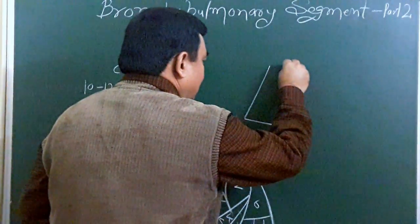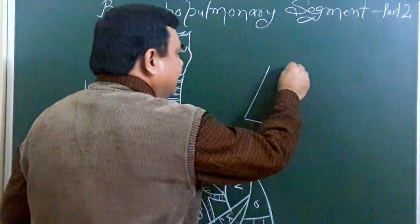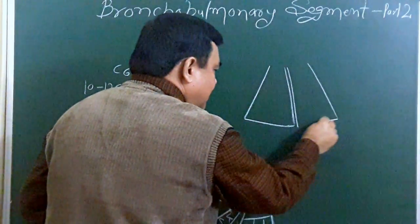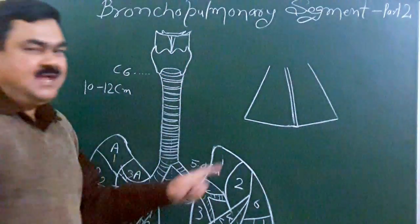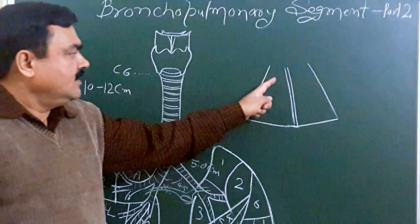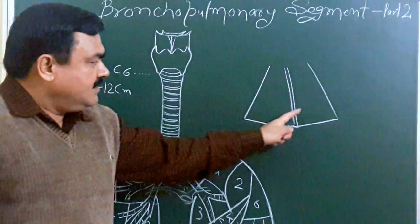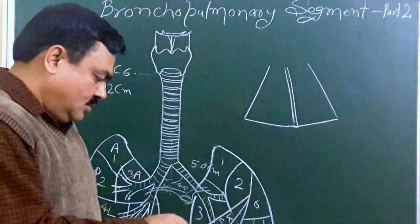This is one bronchopulmonary segment. This is another one which is adjacent to this bronchopulmonary segment. The shape of this segment is wedge-shaped. It has an apex, it has a base. Here in between two adjacent bronchopulmonary segments, there is...